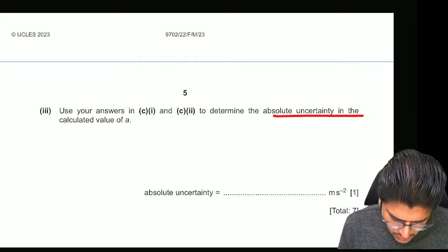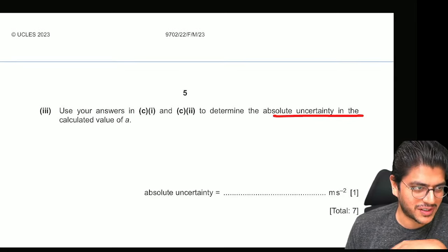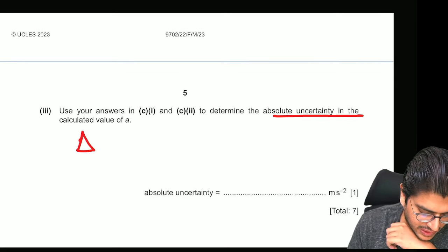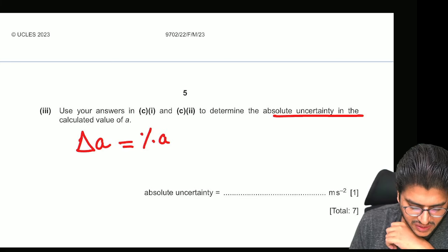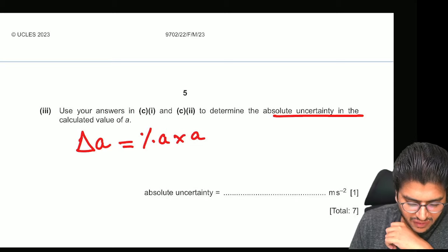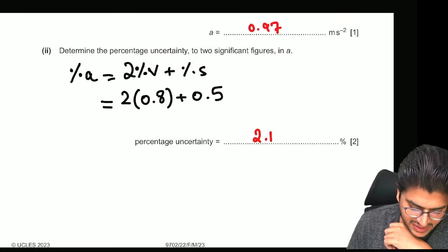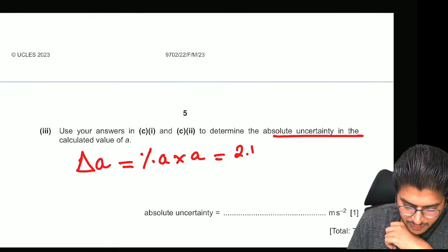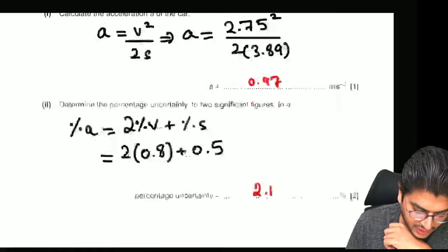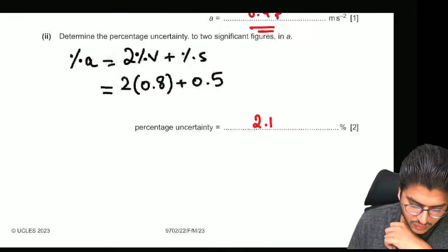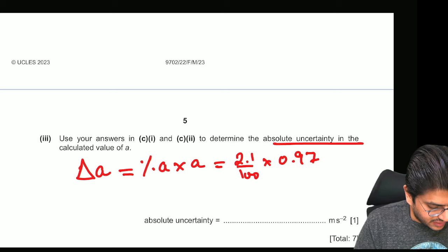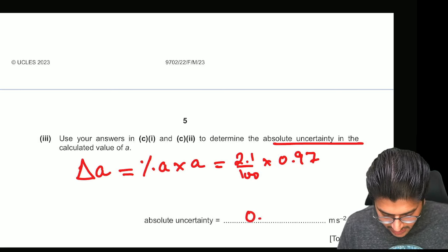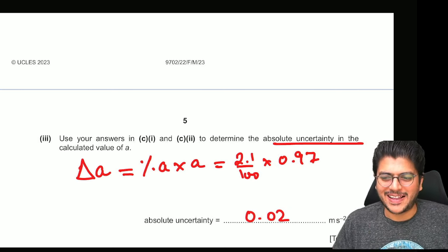Use your answers to calculate the absolute uncertainty. I should be a master at this now. If they're asking to calculate what is the absolute uncertainty, that is always going to be your percentage uncertainty times the actual value of A. Now your percentage uncertainty was 2.1%. And what is your actual value of A? The actual value of A you calculated over here was 0.97. So 2.1% of 0.97, and that gives you 0.02. And that's it.